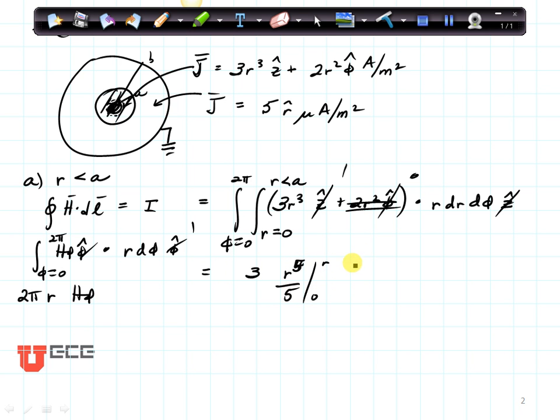And then phi from 0 to 2π. That's going to give me 6π r⁵ over 5. When I solve for H_phi, I'll have our value for H_phi for this problem.